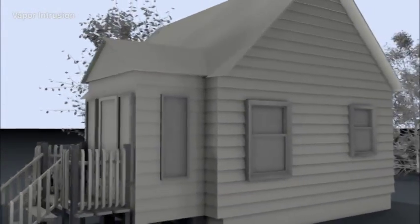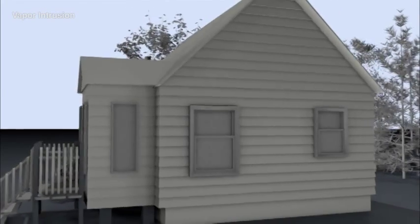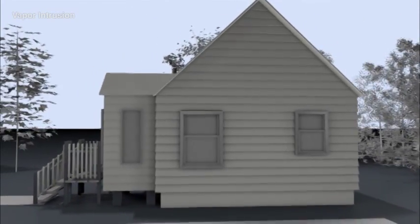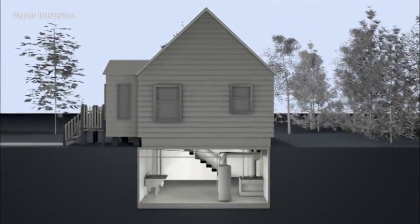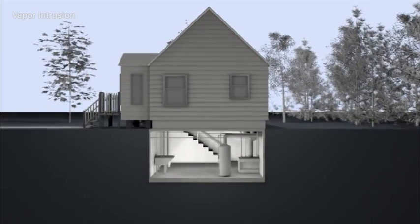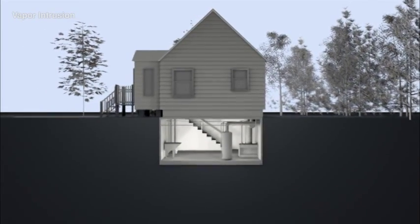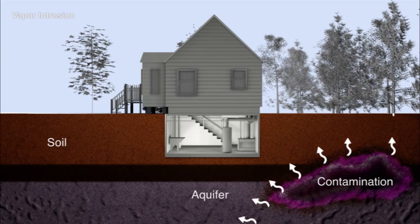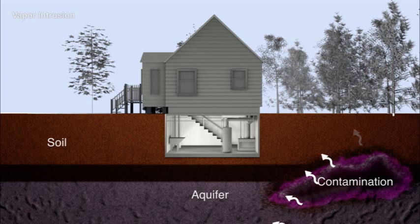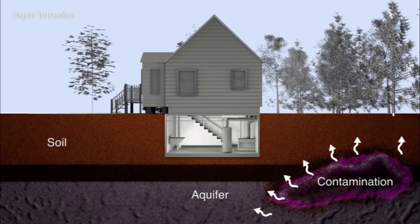To have vapor intrusion, there must be a source of contamination. Only volatile contaminants can release vapors. These contaminant vapors can migrate underground and possibly enter nearby buildings. The risk comes when contaminant vapors accumulate to unhealthy levels in an enclosed space.